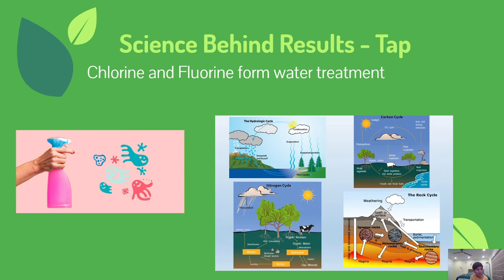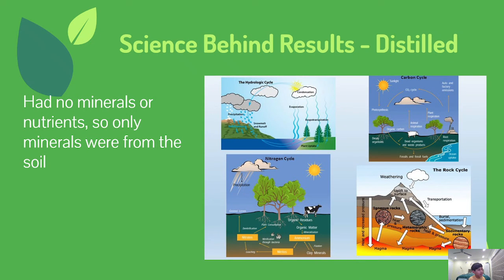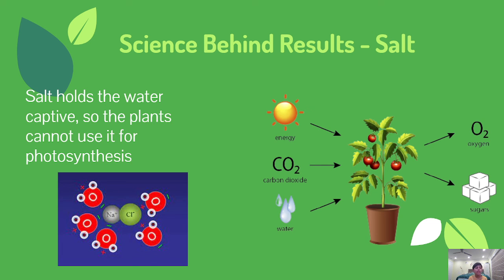For tap water, the chemicals present act as disinfectants and kill the microorganisms that plants need to recycle nutrients to grow, so they did not grow as much. Distilled water has no minerals or nutrients to help the plant or the microorganisms, so the plant grew less. Salt water had no growth because the salt held onto the water such that the plant could not use the water for photosynthesis, therefore it could not grow.